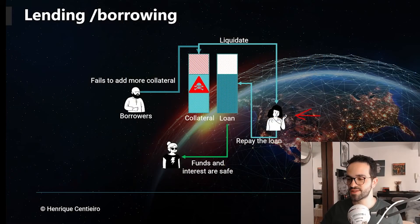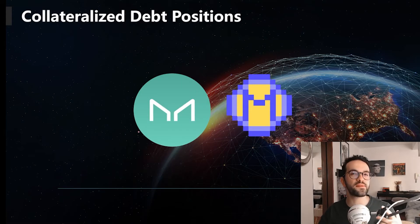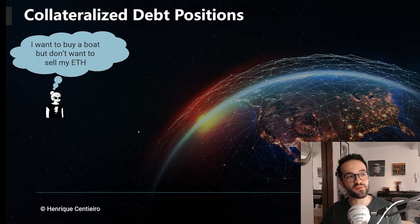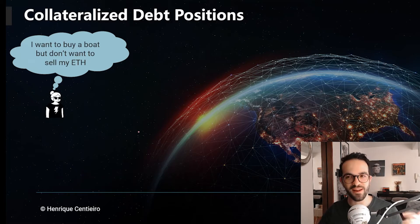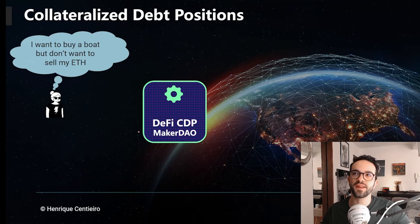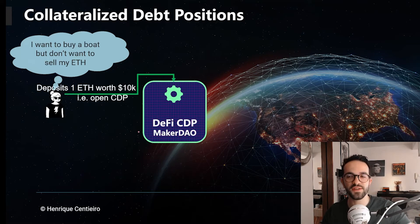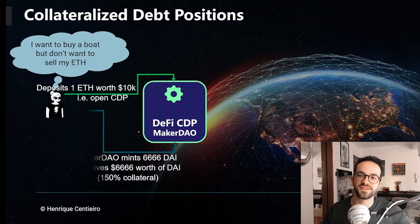Now, CDPs — collateralized debt positions — are slightly different. You only have one side of the deal. From the user perspective, it's very similar if you are the borrower. Let's say Alice wants to buy a boat and she doesn't want to sell her ETH because she believes the ETH price may go up. Instead, she wants to get a loan, so she goes to MakerDAO. MakerDAO is a CDP protocol and she is going to deposit one ETH — let's say for the sake of the example, one ETH is worth $10,000 — to open a CDP, a collateralized debt position.